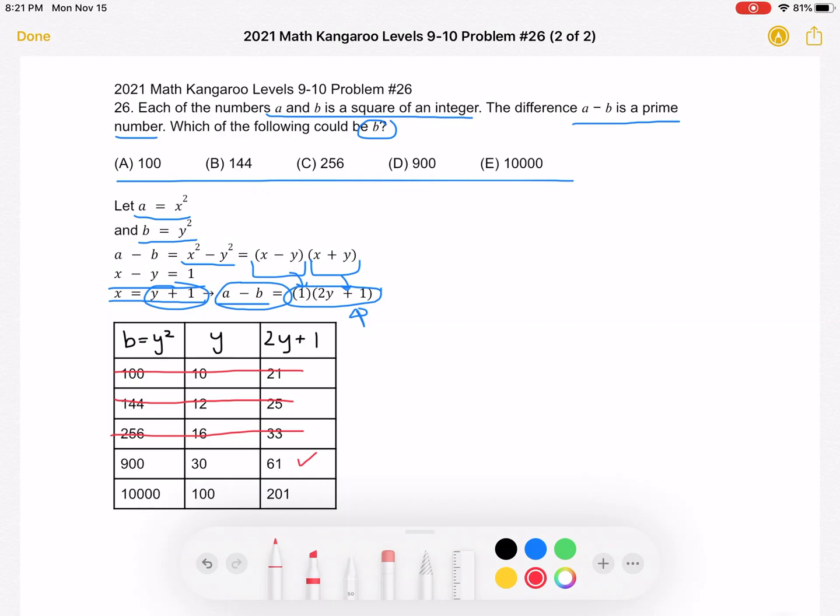If B is equal to 10,000, y is equal to 100. 2y plus 1 is equal to 201. And that is not a prime number.